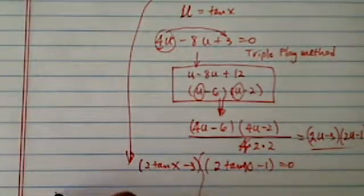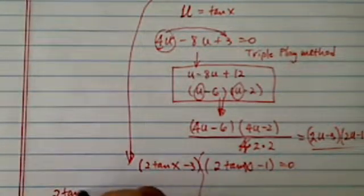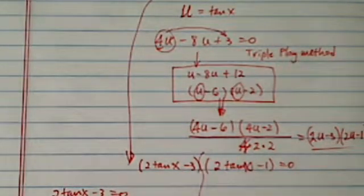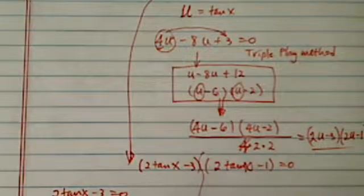So from here I have 2 tangent of x minus 3 equal to 0, tangent of x equal to 3 over 2. And if you do the inverse on your calculator, you'll have 0.9828. This is in radians.